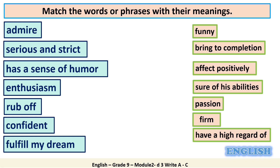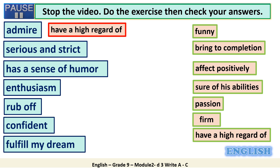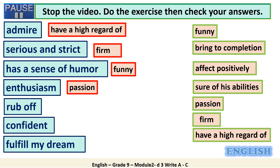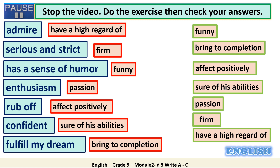Match the words or phrases with their meanings. Stop the video, do the exercise, then check your answers. Admire means: have a high regard of. Serious and strict: firm. Has a sense of humour: funny. Enthusiasm: passion. Rubbed off: effect positively. Confident: sure of his abilities. Fulfil my dream: bring to completion.